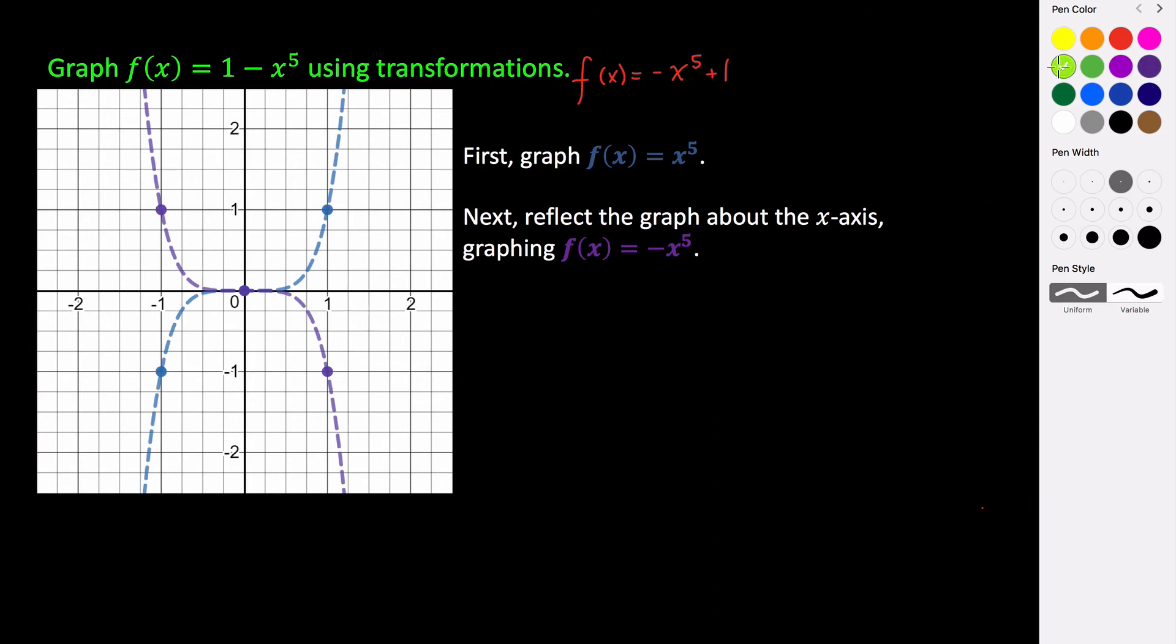And then the last transformation that we want to apply is going to be the +1. So this +1, since this +1 is outside of our power, right? If it was like (x + 1) to the 5th, we would say that that's inside of our function. This moves it horizontally, but because it's outside of our function, it's going to move it up and down. And so this +1 is going to take all of our points on this purple graph and shift them up one unit.